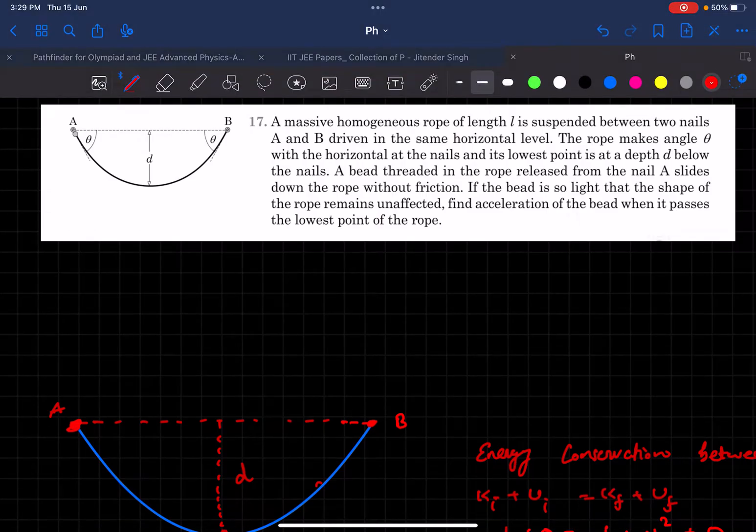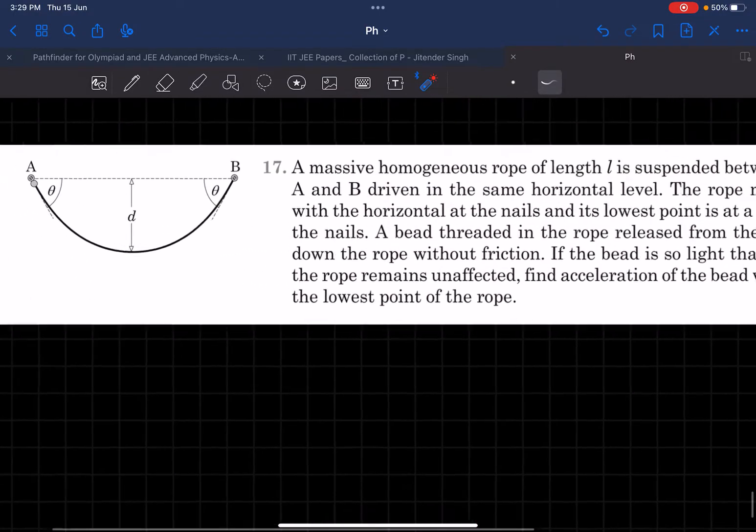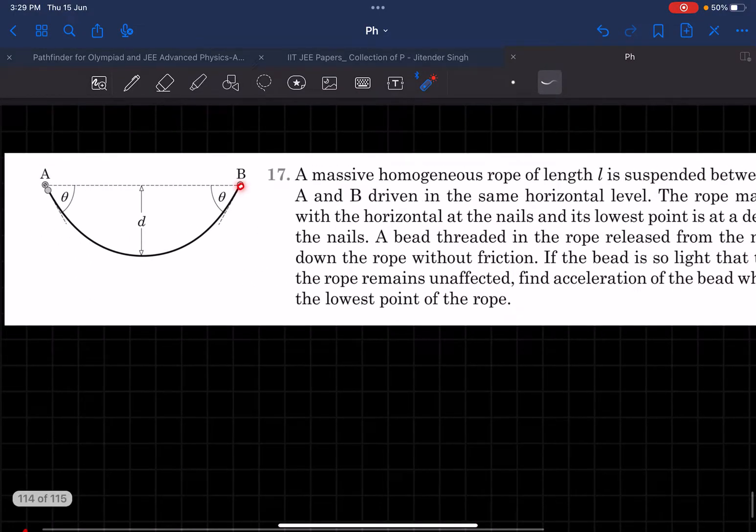Hey everyone, in this video we'll be solving this problem from Pathfinder. In this question, we have a rope which is nailed at two points A and B and is suspended. We also have a bead which is released from rest. As it goes downwards and reaches the bottommost point, we are required to find the acceleration of the bead at this point.